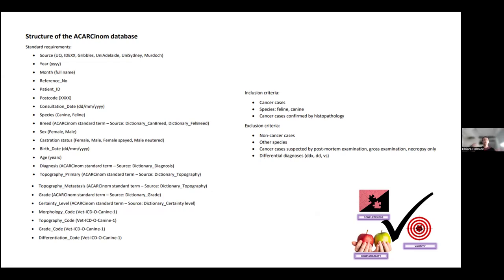We want to avoid uncertainty — for example, a pathology report saying 'could be a lymphoma versus another type of tumor.' This approach led us to tick the boxes of completeness, comparability, and validity of our data. The second approach is analyzing the data format — we asked each data provider to give us a small data set of around 100 cancer cases to analyze and define each step for data extraction and transformation.